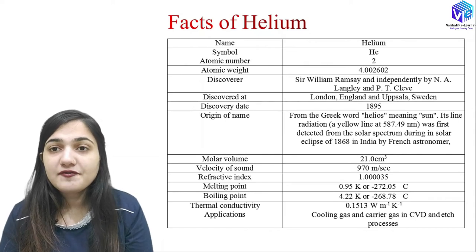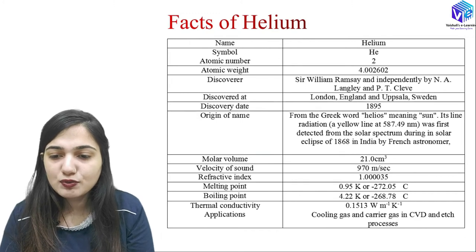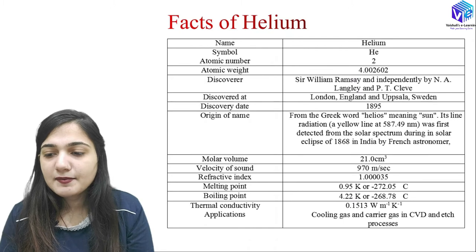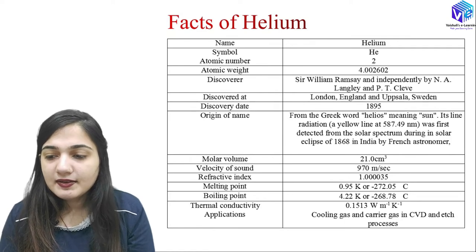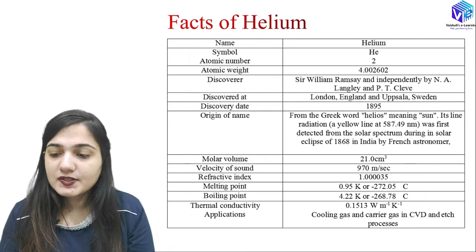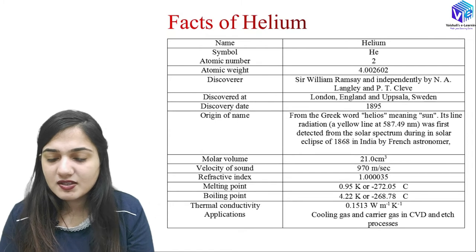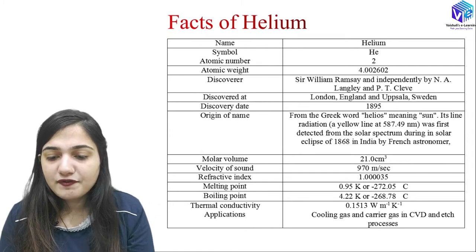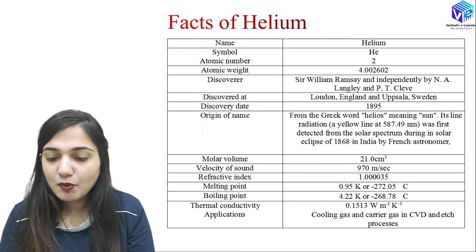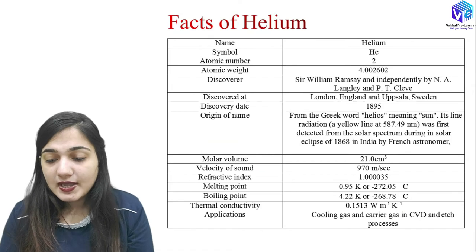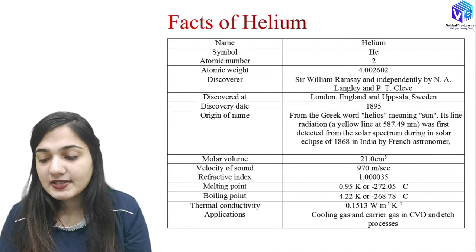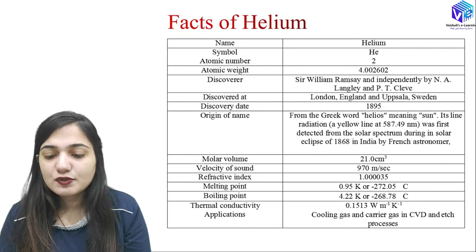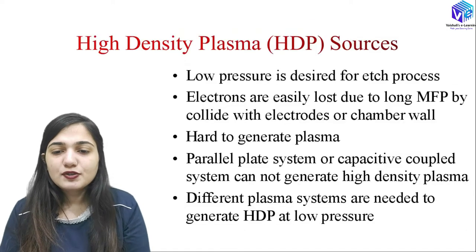Some key facts about helium: its symbol is He, atomic number is 2, atomic weight is approximately 4. It was discovered by Sir William Ramsay and independently by N.A. Langley and P.T. Cleve in London and Uppsala in 1895. Its refractive index is approximately 1. In semiconductor processing, helium is used as a cooling gas and as a carrier gas in CVD and etch processes.